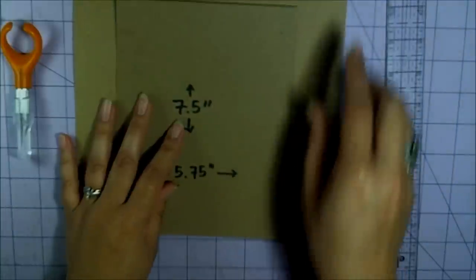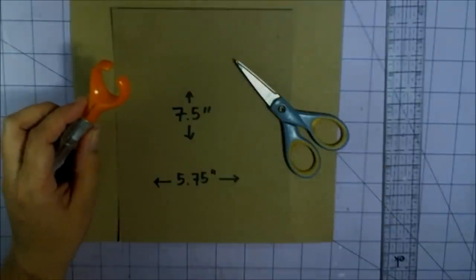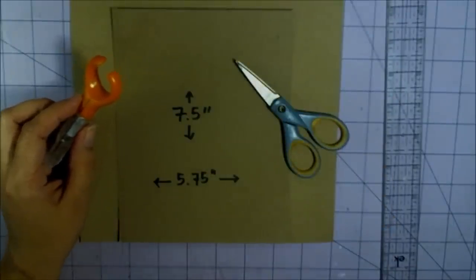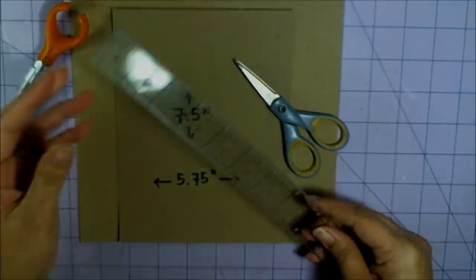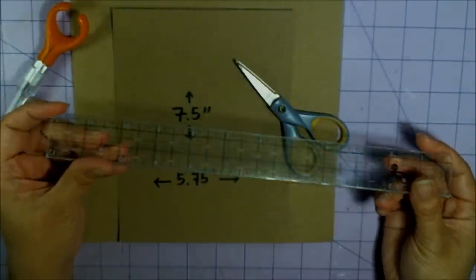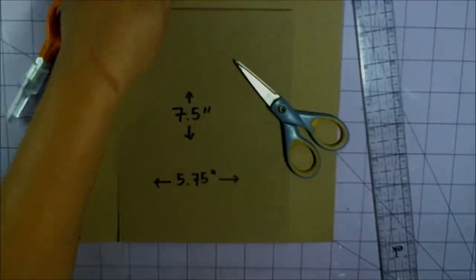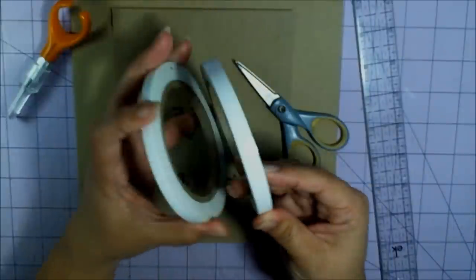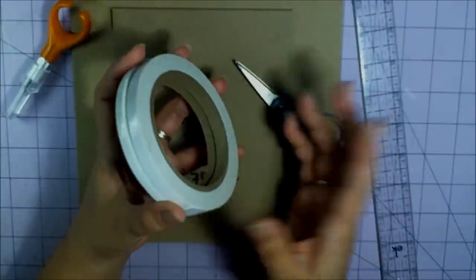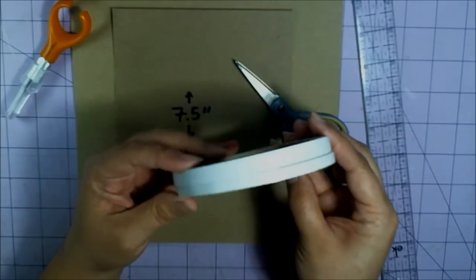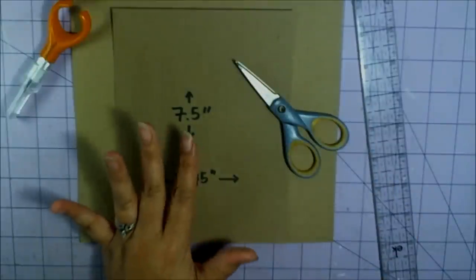You're going to need some scissors, an exacto knife, a ruler preferably with grid lines, a scoreboard and scoring tool. You're going to need some heavy strong adhesive - score tape, miracle tape. I'm going to be using miracle tape, but something strong because you don't want this box to fall apart.